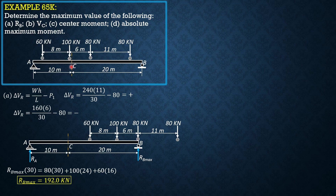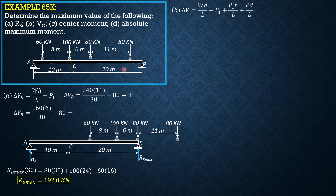For shear at C, we move loads from right to left. Since 8 plus 6 plus 11 is 25, which is greater than 20, there will be an incoming load. The criterion for shear at C is: delta V = WH/L minus P1 plus P1*H/L plus P*d/L. When the 60 kN load is over C first, there is no entering load and no P1, so the sign is initially positive.